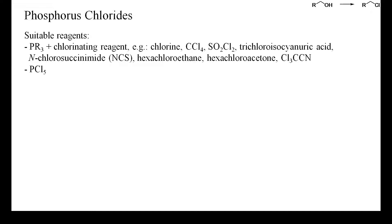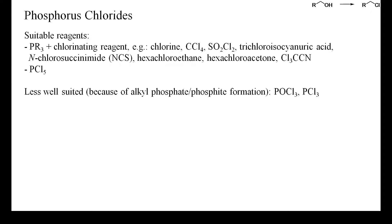Phosphorus pentachloride is a solid prepared by chlorination of phosphorus trichloride with chlorine. It is often used as a solution in phosphorus oxychloride, into which it is converted during the deoxychlorination reaction. In large-scale preparations, the phosphorus oxychloride formed can then be recovered after the reaction by distillation. Although some examples have been reported, phosphorus oxychloride and phosphorus trichloride are not well suited to convert aliphatic alcohols into chlorides. Alkyl phosphates or phosphites are often formed and will usually not react further with chloride.